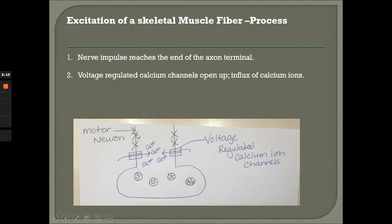Step two: voltage-regulated calcium channels open up. They're voltage-regulated, meaning a change in charge activates them. Here comes the action potential — that depolarization event — and it activates the calcium channels. The calcium channels open up and allow for an influx of calcium ions rushing into the axon terminal, shown by the arrows, so now we have a bunch of calcium on the inside.